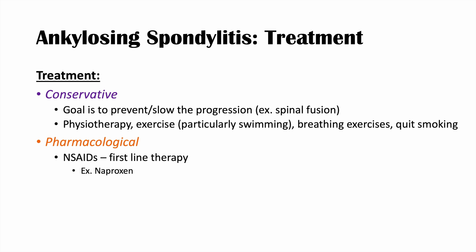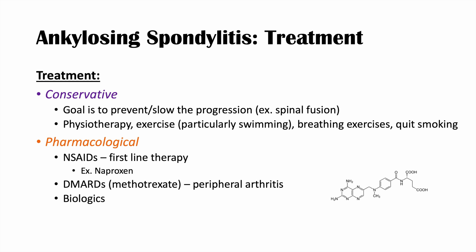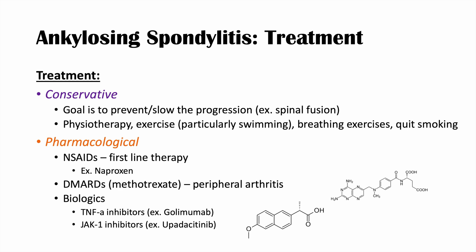For patients with peripheral arthritis, disease-modifying antirheumatic drugs (DMARDs) such as methotrexate can be used. For patients who do not respond to NSAIDs or other treatments, biologics are an option, though they are expensive. These include TNF-alpha inhibitors like golimumab, and JAK1 inhibitors like upadacitinib.